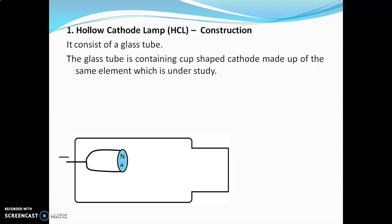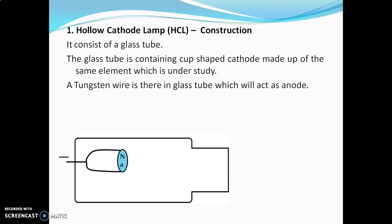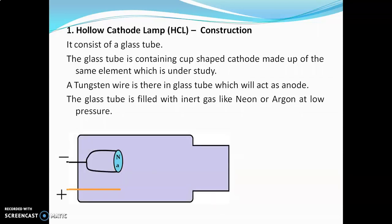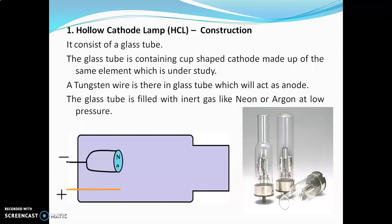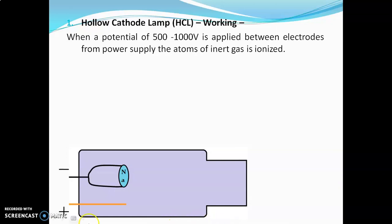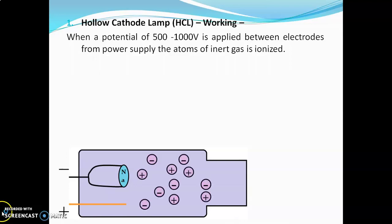If we want to study both elements — sodium and magnesium — we have to use both lamps. A tungsten wire is present in the tube which acts as the anode. The glass tube is filled with an inert gas like neon or argon at low pressure. When a potential of 500 to 1000 volts is applied between the electrodes, the atoms of the inert gas start ionizing — meaning the argon gets ionized and produces positive and negative ions.